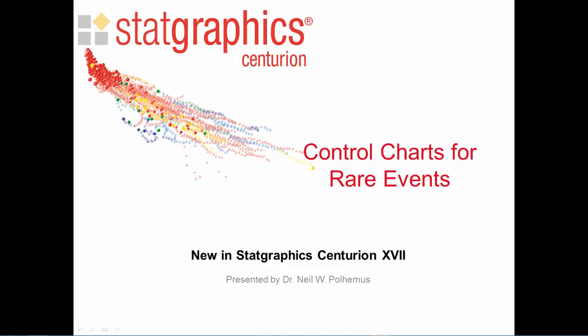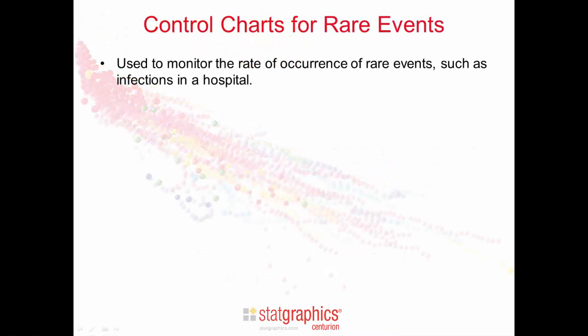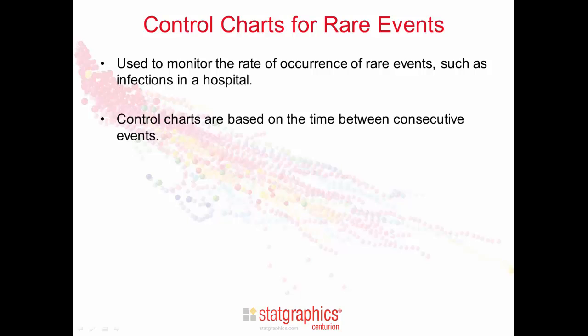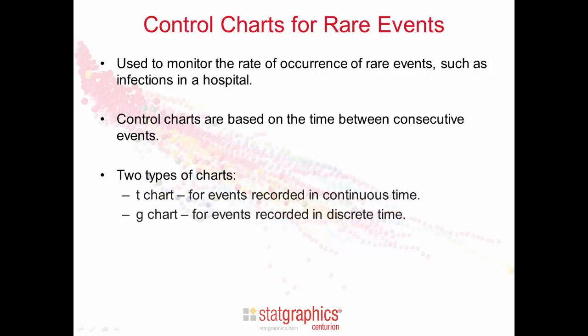This video describes control charts for monitoring the occurrence of rare events. They're new in StatGraphics Centurion version 17. The control charts are designed to monitor the rate of occurrence of rare events, such as infections in a hospital. The charts are based on the time between consecutive events. There are two types: a t-chart for events recorded in continuous time, and a g-chart for events recorded in discrete time.